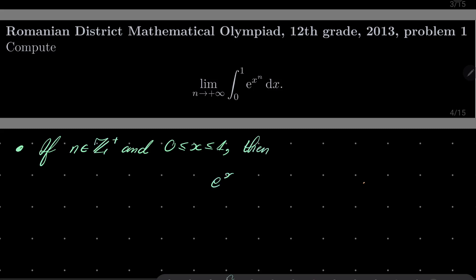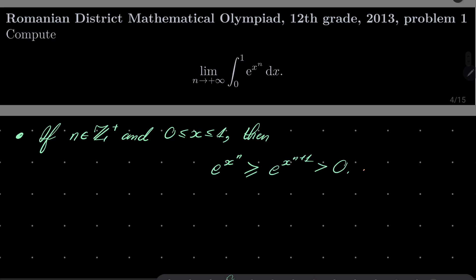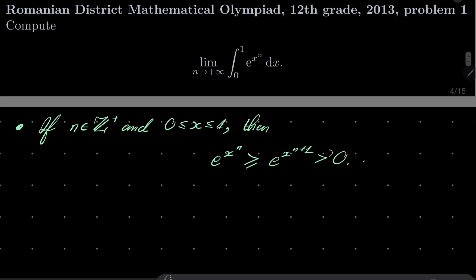then, e to the power of x to the power of n is greater than or equal e to the power of x to the power of n plus 1. Well, this inequality is obvious.